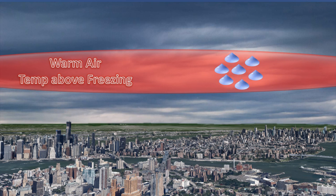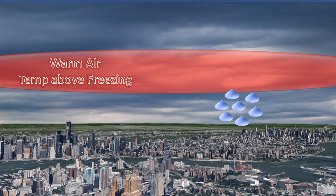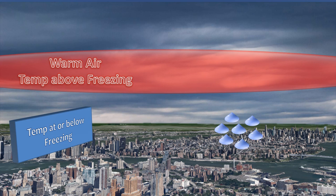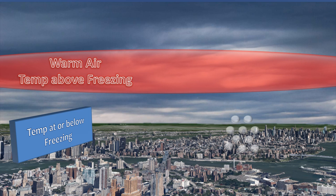It melts into liquid — now we have raindrops — but then it falls back into a layer below freezing and has enough time while falling through it to freeze into ice pellets. And that's how we see sleet at the surface.